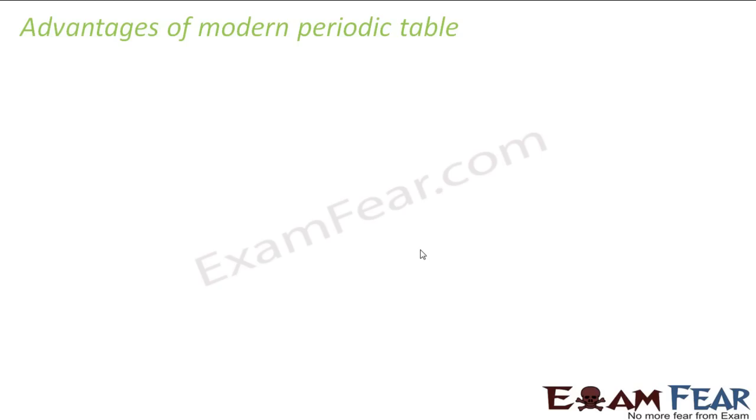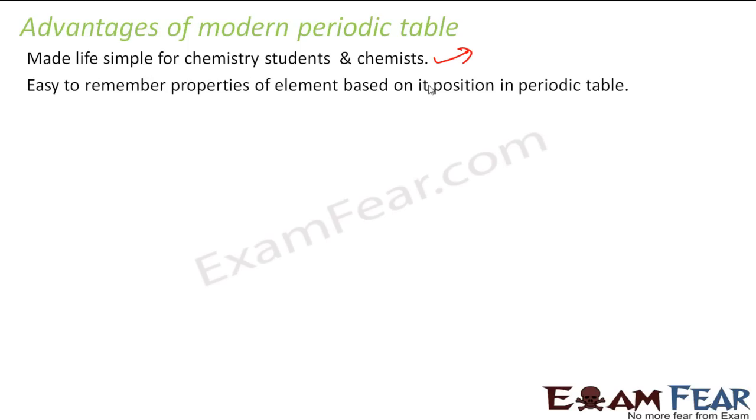There are some advantages of modern periodic table. First is it made the life of chemists and chemistry students like you easy because just by looking at the location or position of the element in the periodic table you can guess a lot of things about the element. It is easy to remember properties of elements based on its position in the periodic table.